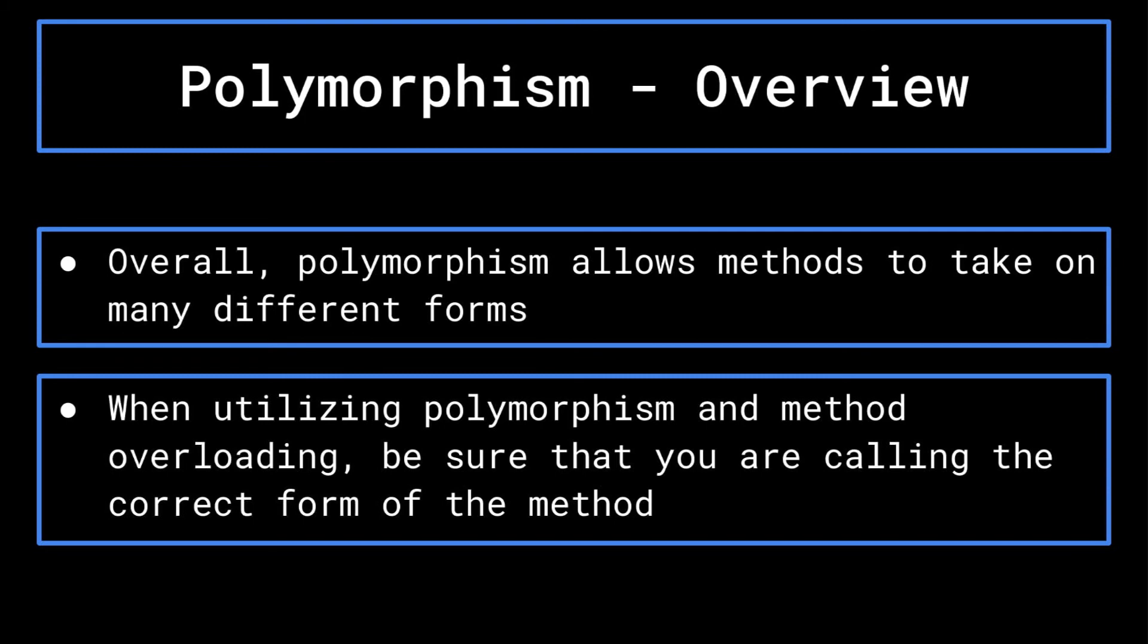That does it for polymorphism. And with the end of polymorphism, the final of the four main principles, comes the end of this miniseries on an introduction to object oriented programming. Hopefully you have gained enough of an understanding of object oriented programming as a concept that you are able to get started implementing it in your own programs.